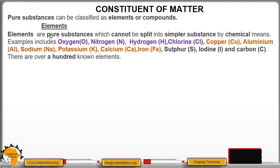Elements. Elements are pure substances which cannot be split into simpler substance by chemical means. Examples include oxygen, symbol O; nitrogen, symbol N; hydrogen, symbol H; chlorine, Cl; copper, Cu; aluminium, Al; sodium, Na.